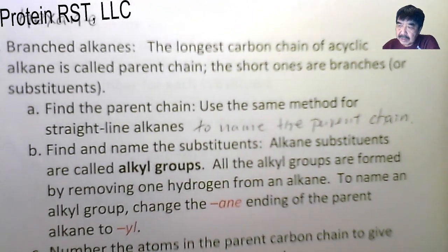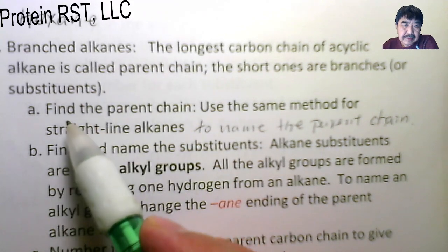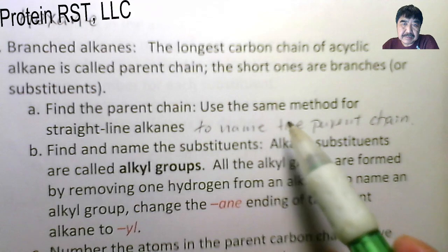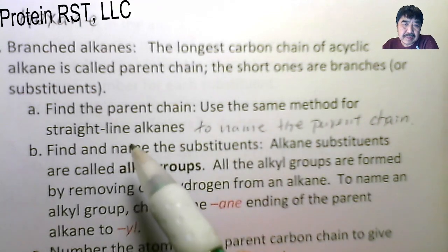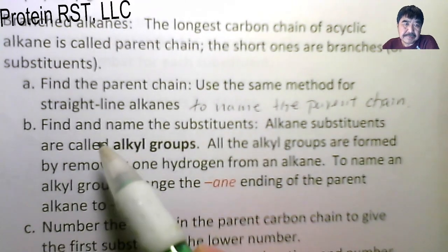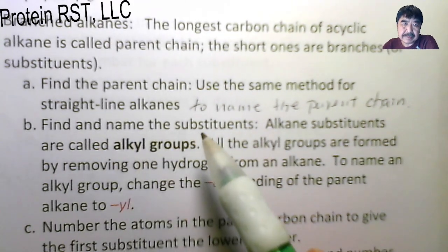To name branched alkanes, first find the parent chain. Use the same method for straight-line alkanes to name the parent chain. Then find and name the substituents.